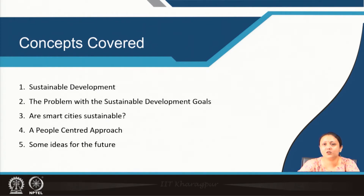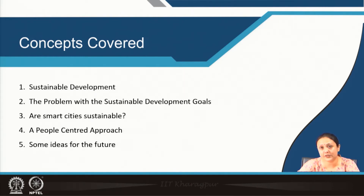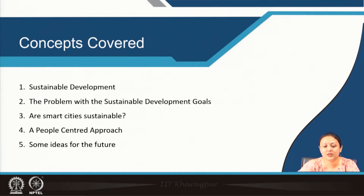For today's lecture, we will first talk about the concept of sustainable development, and then briefly examine the problems and contradictions within the Sustainable Development Goals or SDGs. We will then move on to discuss India's very ambitious Smart Cities Mission and whether it can deal with the problems of urbanization and pay specific attention to the conservation of urban ecological commons and upscale urban ecological resilience. Finally, we will talk about the people-centered approach for achieving sustainability, contextualizing it in the global south, and some innovative ideas for the future.